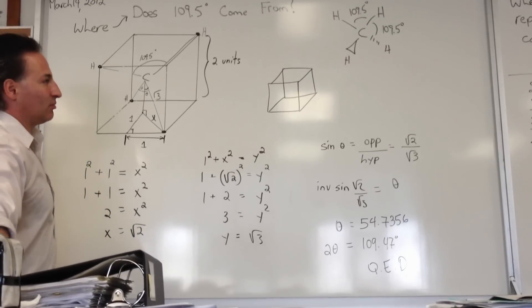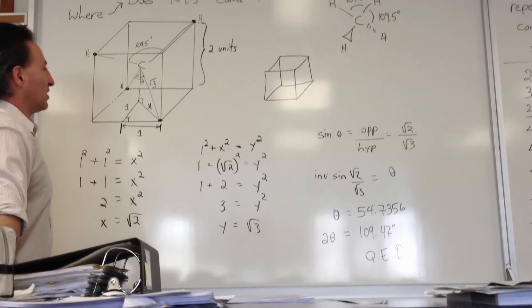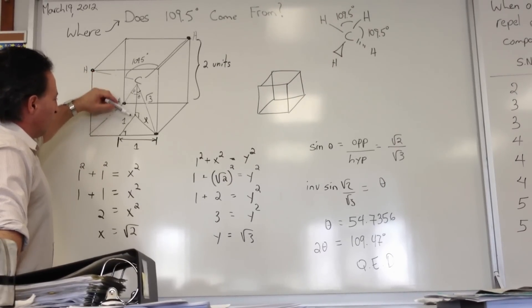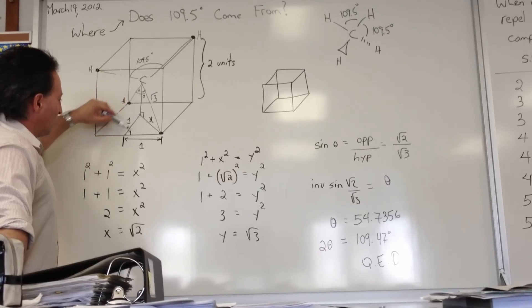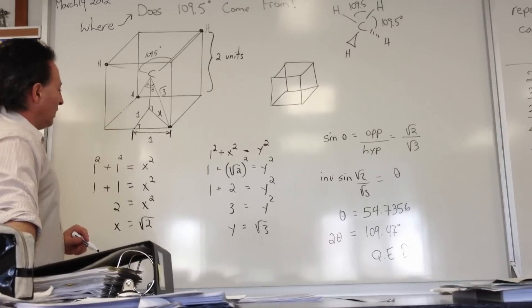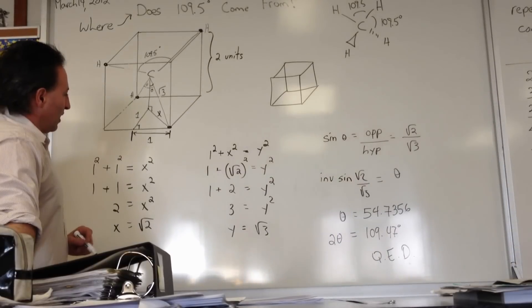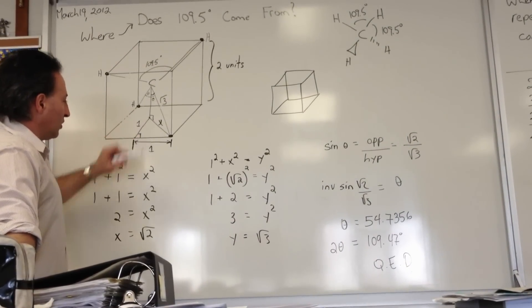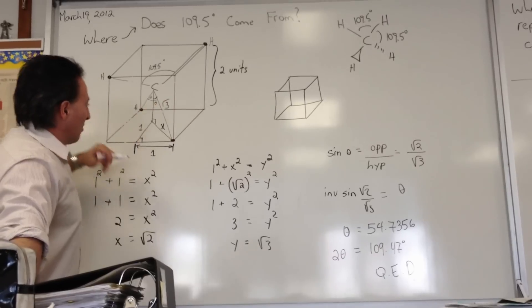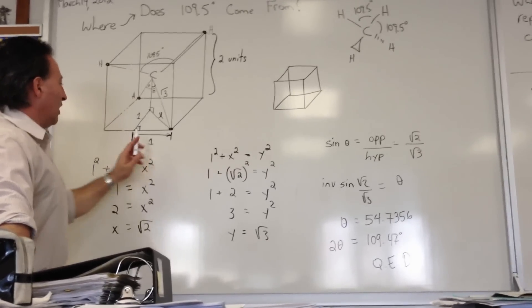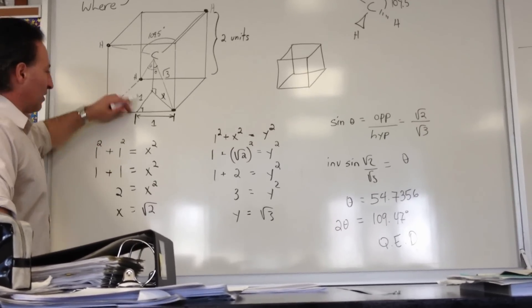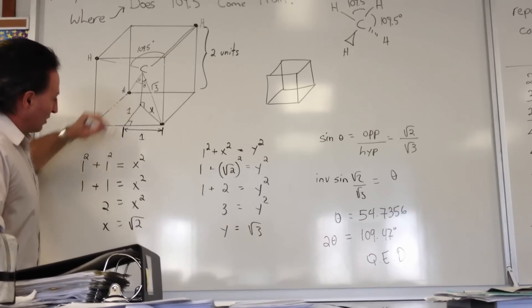That's what a tetrahedral molecule looks like — it fits inside a cube and touches opposite diagonals with the hydrogen atoms. Draw a line from the center of the bottom of the cube to the center of the outside edge, and another line to the corner from the center of that plane. The edges of this triangle are going to be one unit long, representing exactly half the distance — the length of one edge. With an edge length of two, half that is one. This is a 90-degree angle; it doesn't look like one, but it is — it's just drawn in perspective.